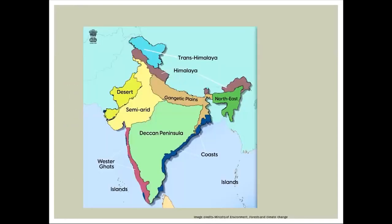The Western Ghats spreads across six states, beginning with Gujarat. This region extends from the south of the river Tapi in the north up to Kanyakumari. It is one of the biodiversity hotspots, which means the species of plants and animals found here can be seen nowhere else on earth. There is high endemism in this region.